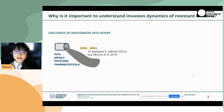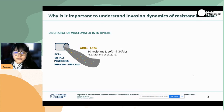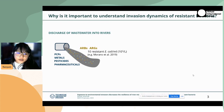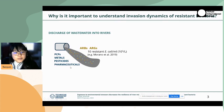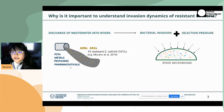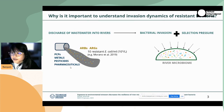It is not only the ARBs and the ARGs that are released into the river water — it is also the abiotic pollutants: personal care products, metals including heavy metals, pesticides, and pharmaceuticals that are co-released into the river. What this does is introduce bacterial invasion and also insert selection pressure on the river microbiome.